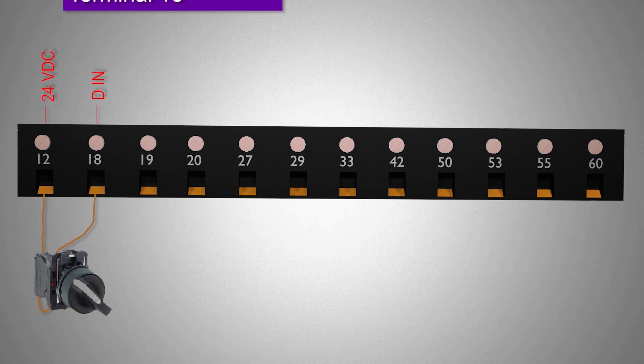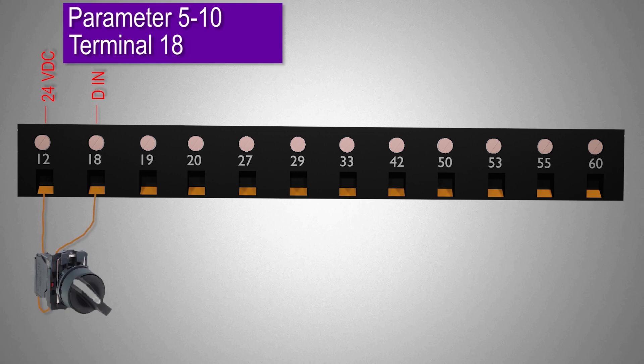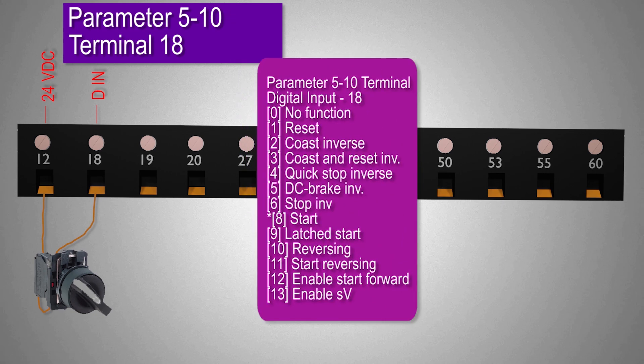The functions for terminal 18 can be programmed by using parameter menu 5-10. We can select a function for terminal 18 from the menu like start, stop, reverse and reset functions. For today's tutorial we will set 8 in parameter 5-10 to program this terminal as start signal input.